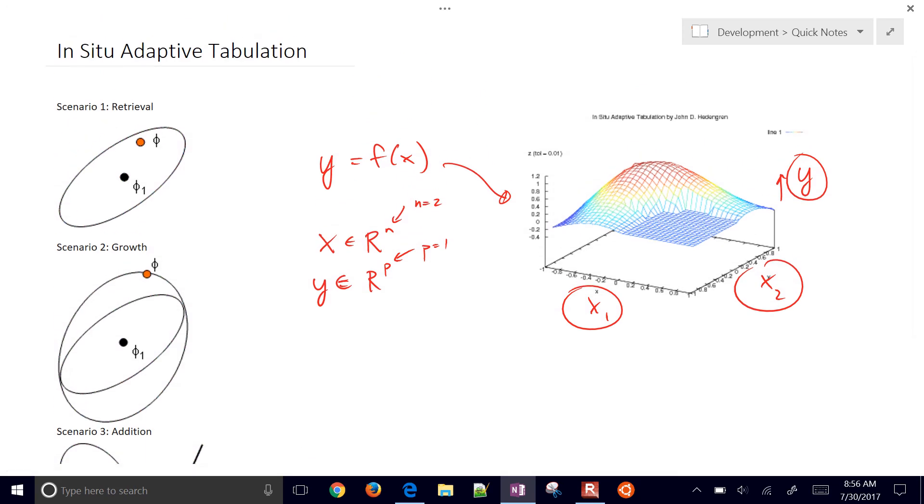Now if you are inside, if this is your query point here, and you are inside the accuracy region defined by that ellipsoid, then it just does a retrieval and returns that.